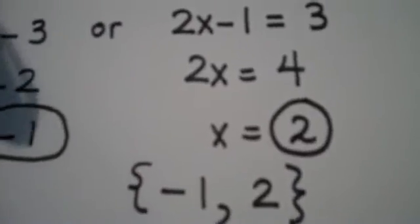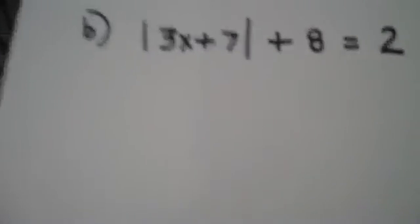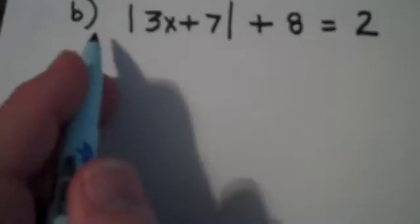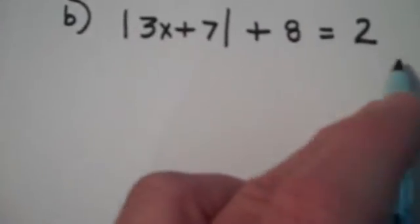Now, remember what I said in this problem. When you're solving an absolute value equation, let's look at another one. The absolute value of 3x plus 7 plus 8 equals 2.